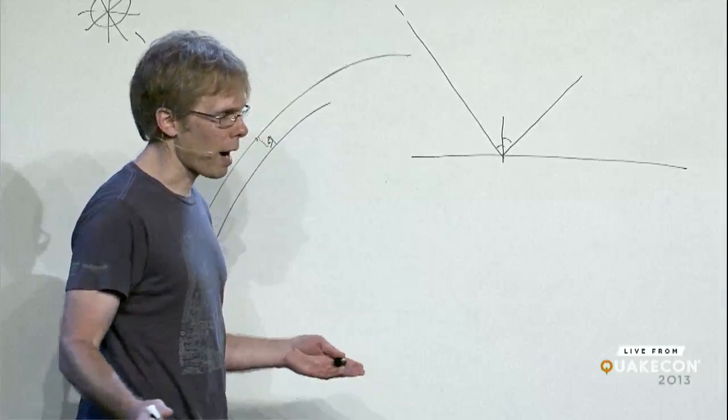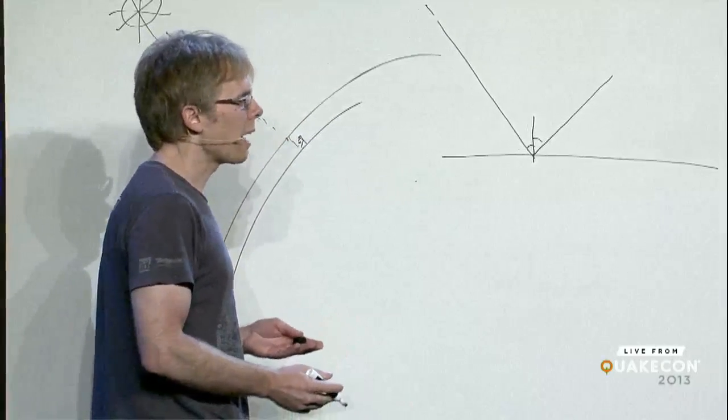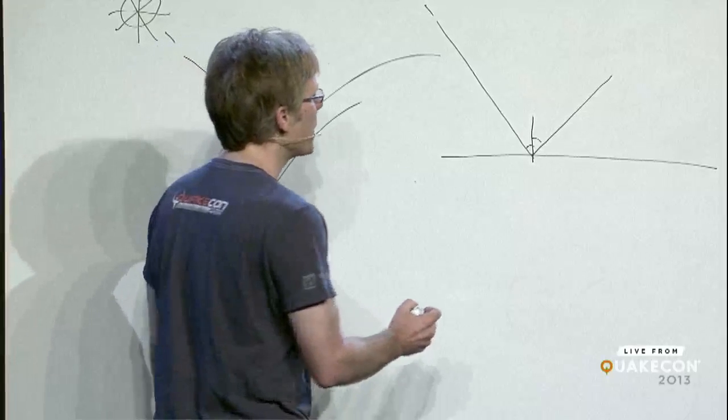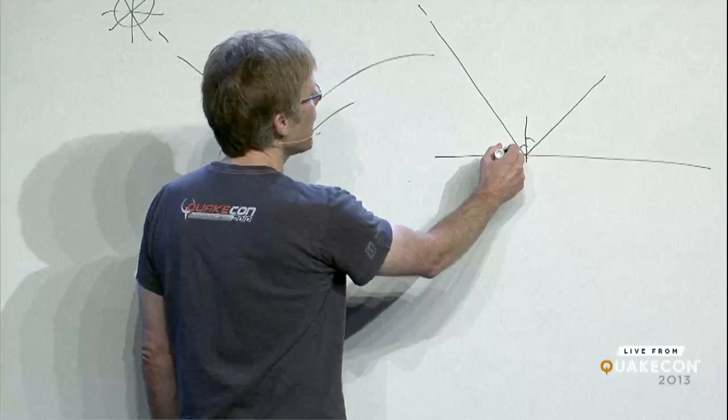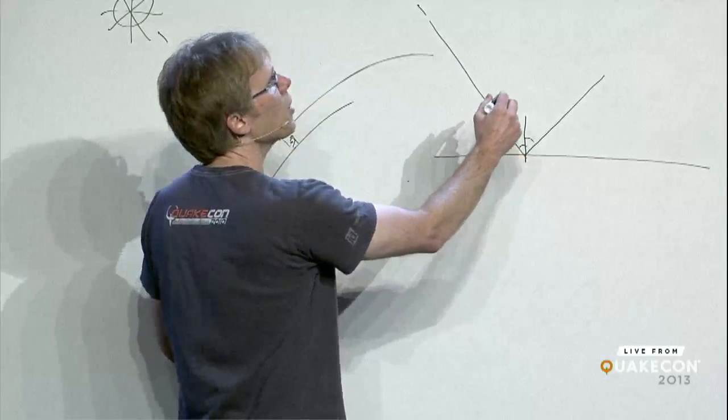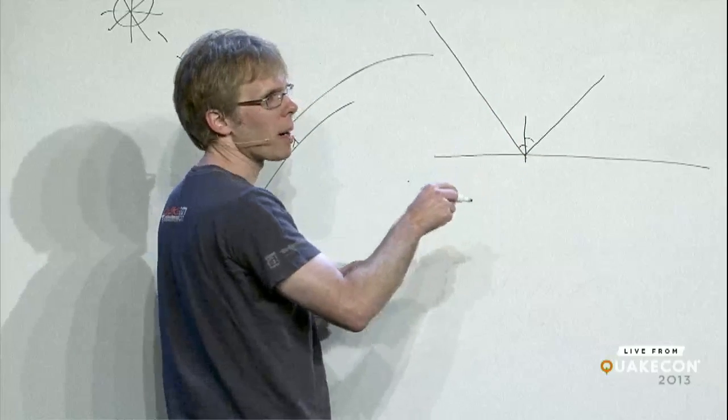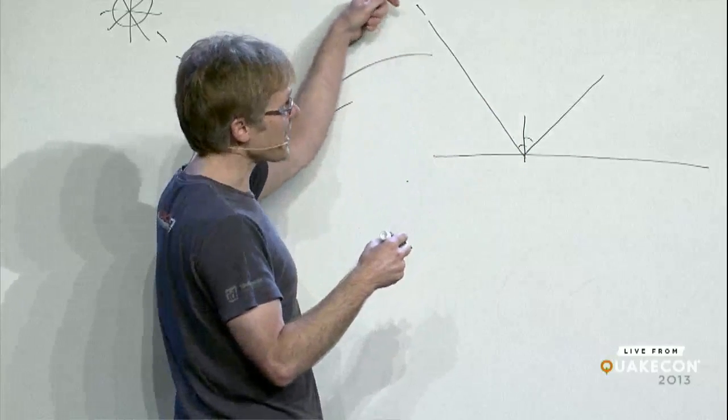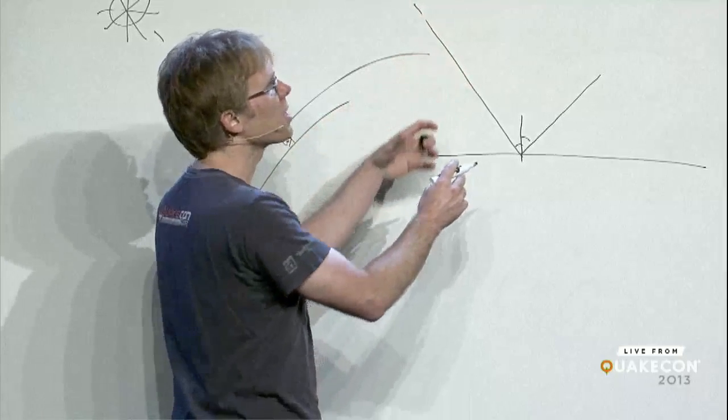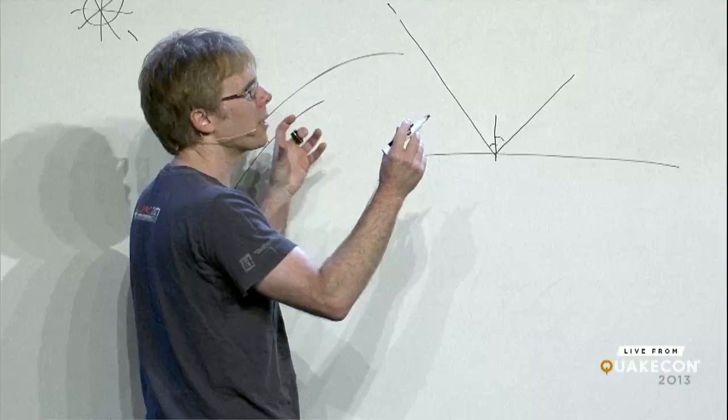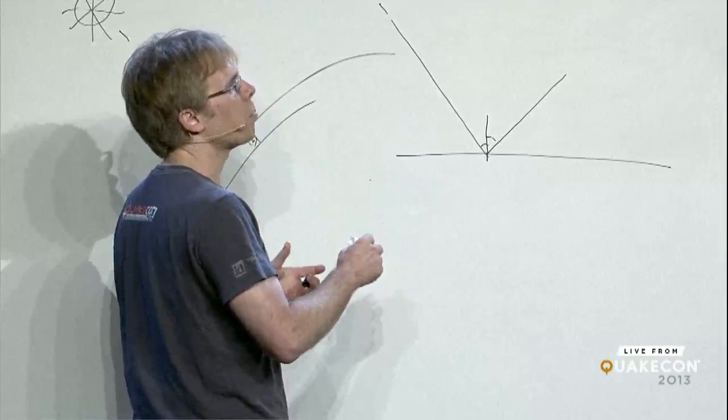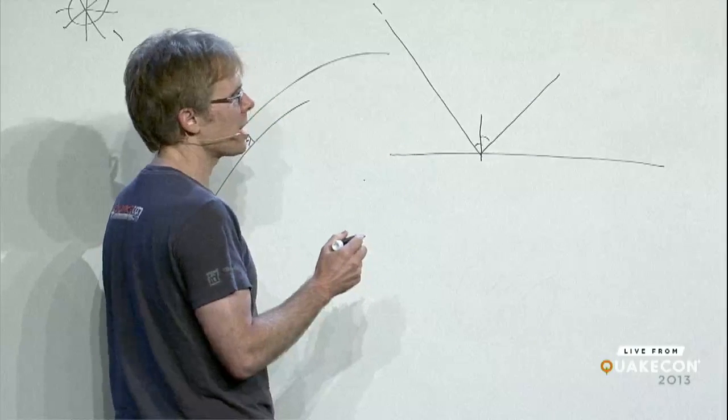But most of the surfaces that we look around us do not behave like this. We have a spread of the energy where it comes in and it bounces off to some degree in every direction. No matter which way you look at most surfaces, zillions of photons coming in. Some of them go in every direction. They just go in a direction that's biased based on the type of surface that it is.